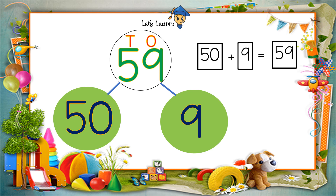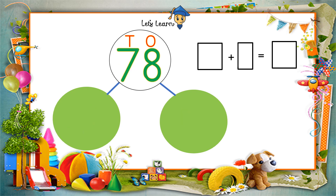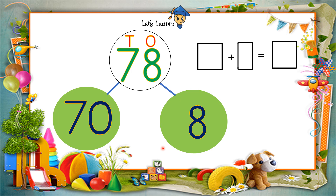Let's do the next one — 78. What will go in 1s? 8. What will go in 10s? 7. And along with 7 there will be a 0. Now let's write the sum: 70 plus 8 equals 78. 70 and 8 equals 78.